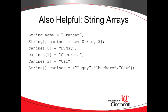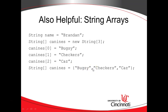So, what is a string array? An array is a collection of strings. For example, string name equals Brandon — that's a single string, not an array. But with string canines, we're saying we want to store three strings in this one variable canines, and we're going to number them 0, 1, and 2 — Bugsy, Checkers, and Cas. The last line, string canines equals curly brace, "Bugsy", "Checkers", "Cas", close curly brace, semicolon — this one line is a shortcut equivalent to the four preceding lines.